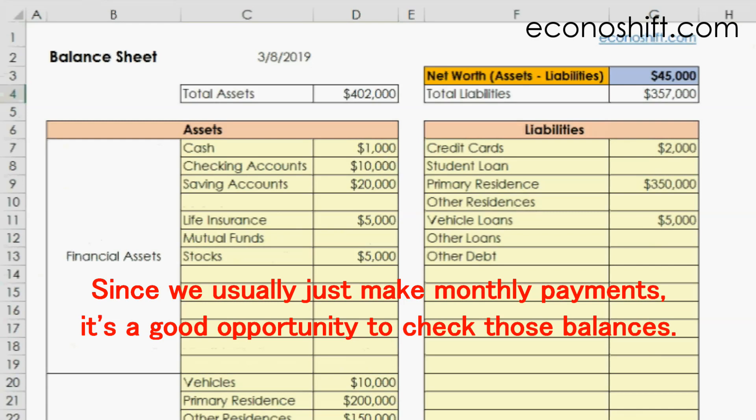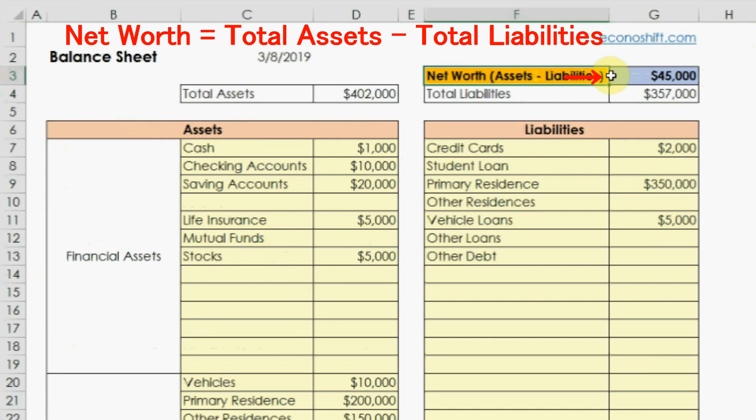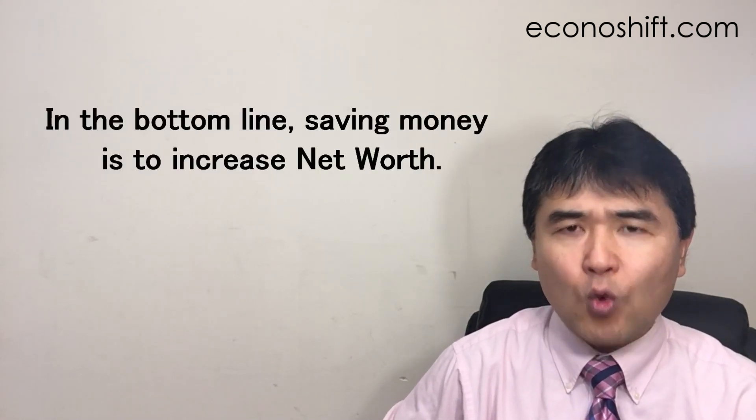Since we usually just make monthly payments, it's a good opportunity to check those balances. After completing all inputs, the total assets and total liabilities will come up and the net worth will be calculated by subtracting the total liabilities amount from the total asset amount. Even if you have a lot of assets, if you also have a lot of liabilities and net worth is small, or if it's a negative number, your household account is not healthy. In the bottom line, saving money is to increase net worth.